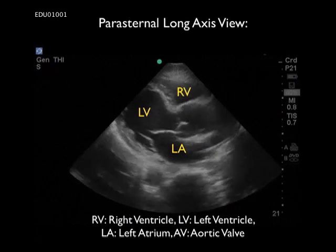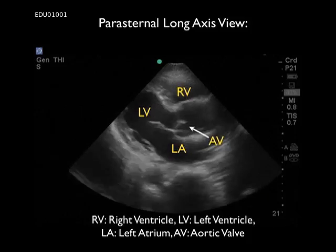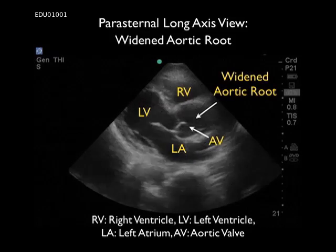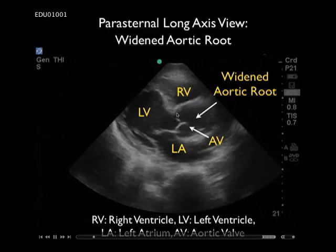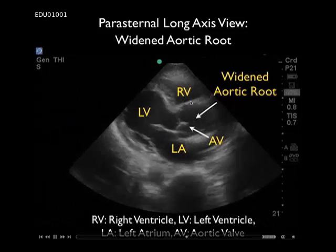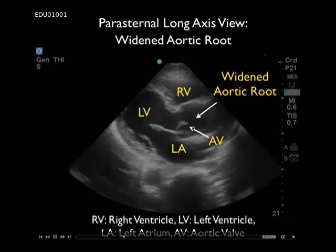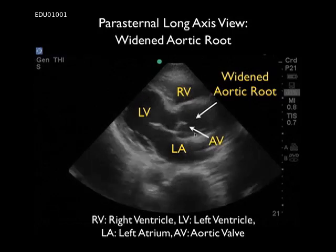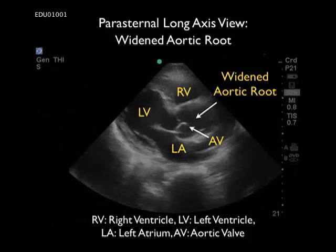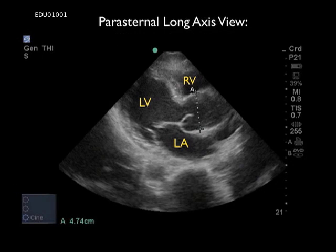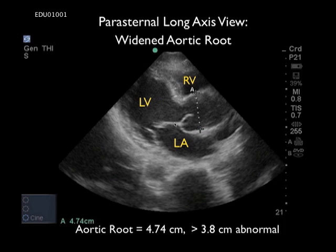In this video clip we see a parasternal long axis view of the heart. Recall that we see three chambers from this view: the left atrium, the left ventricle, and the right ventricle. We see the aortic valve and the left ventricular outflow tract. Notice in this video clip that this aortic root is relatively widened. A normal aortic root should measure no greater than 3.8 centimeters, and a widened aortic root is suspicious for thoracic aortic dissection or aneurysm. Here we're actually measuring the aortic root, and it measures 4.74 centimeters — indicating a thoracic aortic aneurysm. We may also be able to see an intimal flap here, which would indicate a dissection as the etiology for the patient's shock.